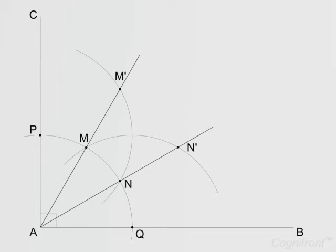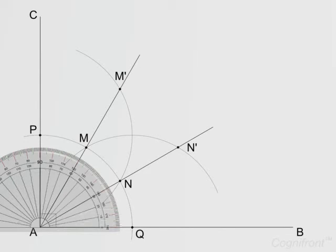Similarly join line AN and extend it long enough. Their intersection points with outer arcs are M prime and N prime. So this is how we have created lines AMM prime and ANN prime that divide the angle CAB into 3 equal parts. If you measure them, then they will be 30 degrees each.